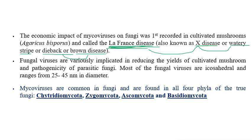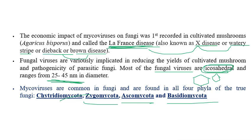Mycoviruses have been reported to reduce yields in cultivated mushrooms and are pathogenic to parasitic fungi. Most fungal viruses are icosahedral in shape, with a size ranging from 25 to 45 nanometers in diameter. Mycoviruses are common in fungi found across almost all phyla including Chytridiomycota and Zygomycota.